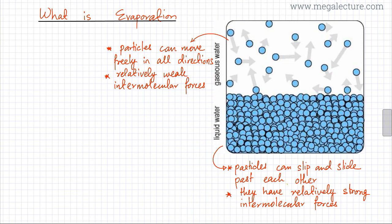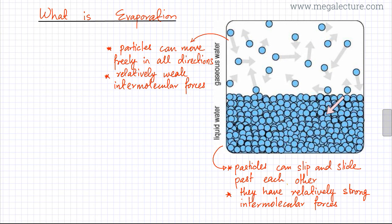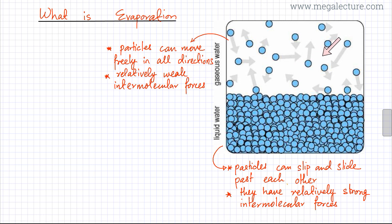I've written this down. This describes the liquid state: particles can slip and slide past each other and have relatively strong intermolecular forces, so they stick around but can randomly slip and slide. In gaseous state, particles can move freely in all directions and have relatively weak intermolecular forces — they're not attracting each other very strongly. The reason is that they're more energetic.